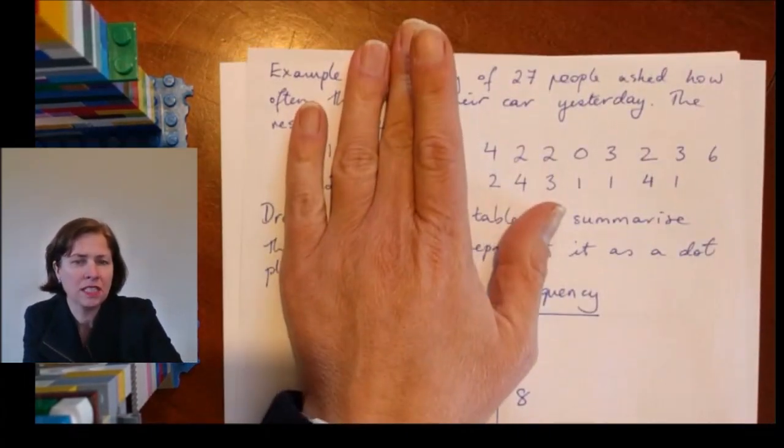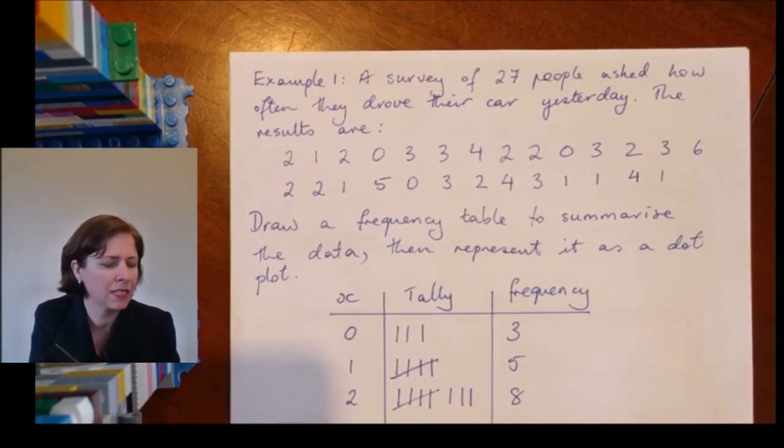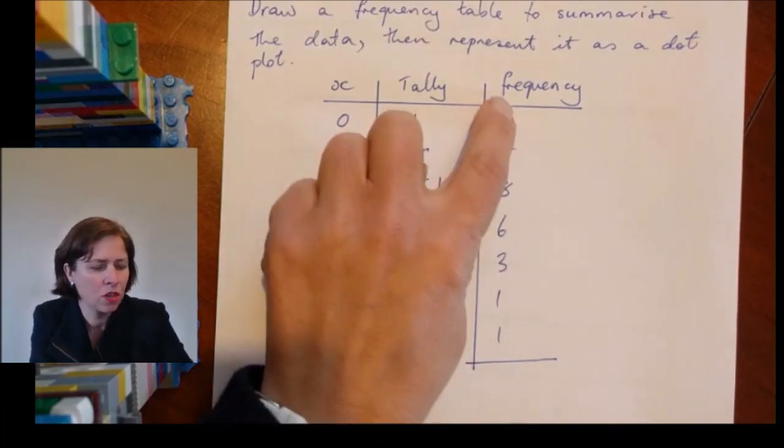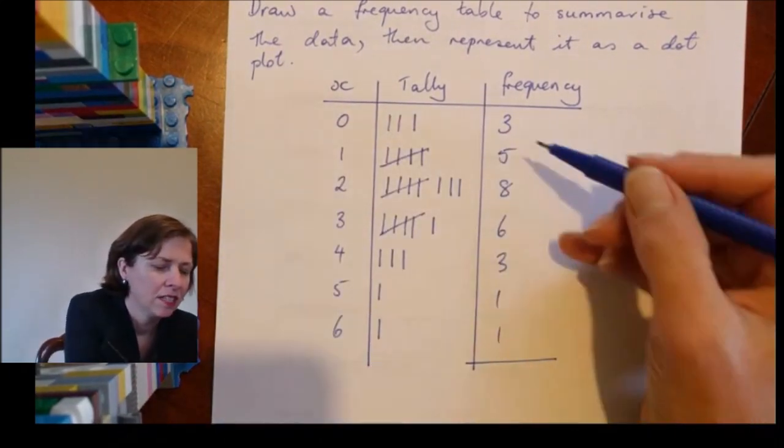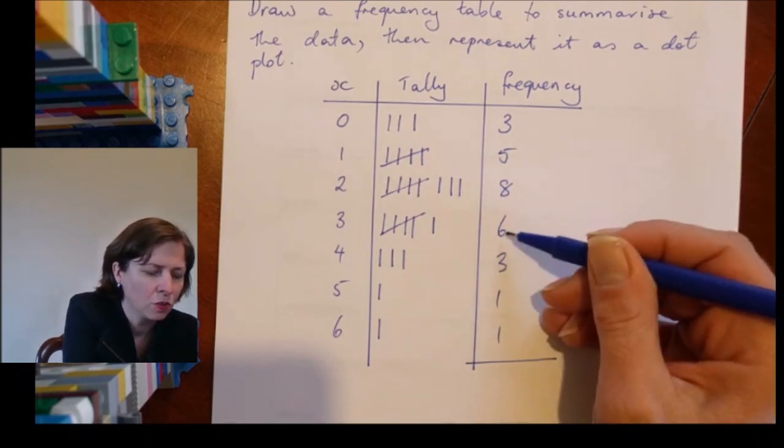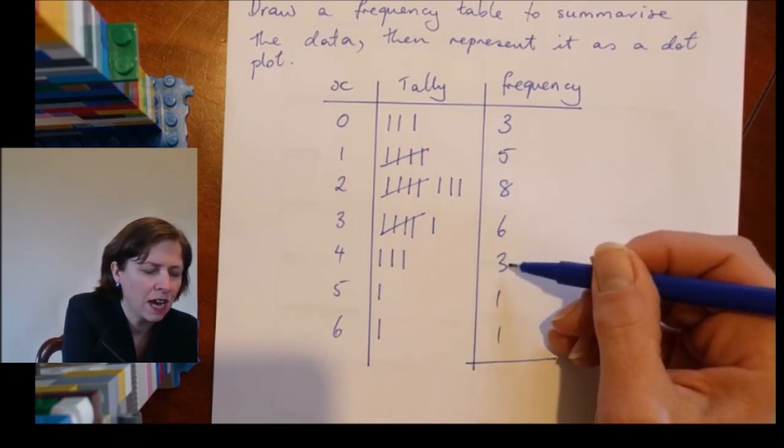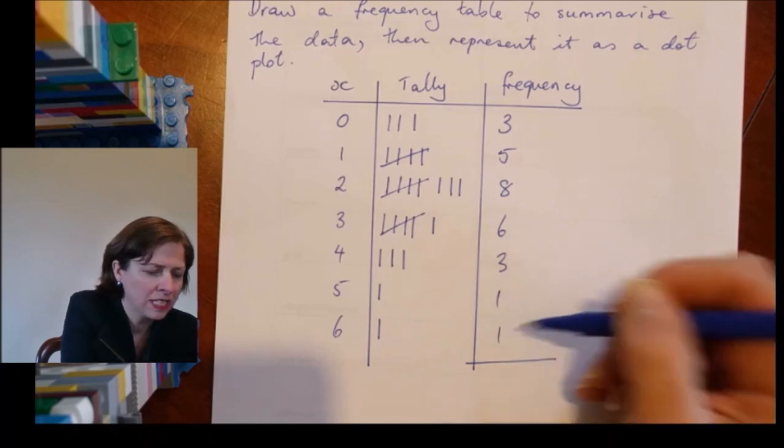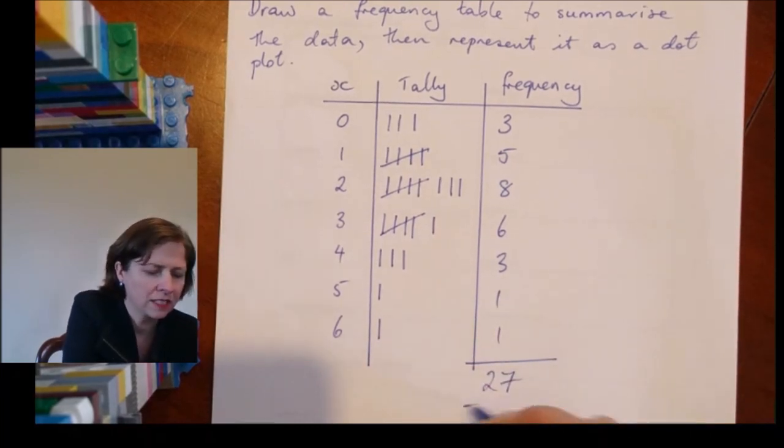What I do is I add all these numbers up. I know from the question that I started with 27 people, so let's make sure I've ended up with a grand total of 27. Five and three, that's eight, sixteen, twenty-two, twenty-five, twenty-six, twenty-seven. That is correct, that's what I wanted.